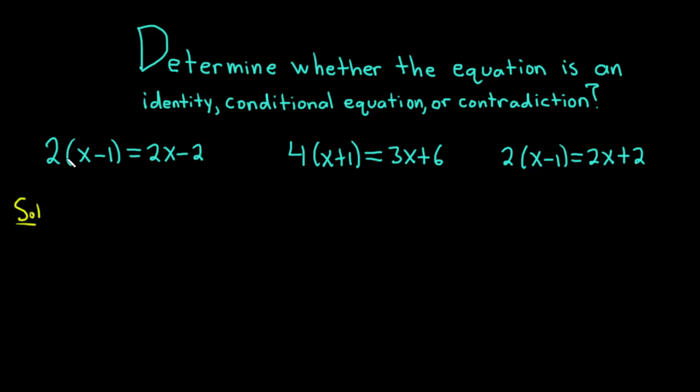We can distribute the 2, so we get 2 times x, which is 2x, and 2 times negative 1 is negative 2. On the right-hand side we have 2x minus 2.